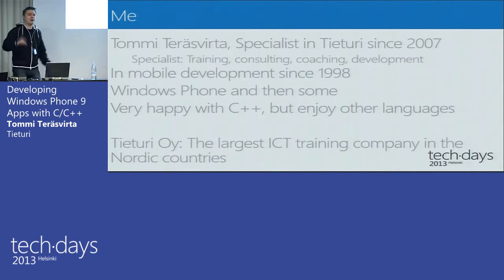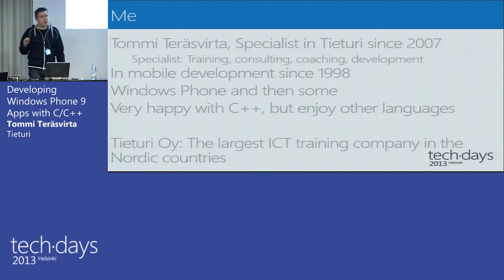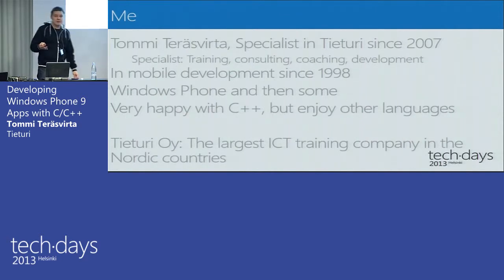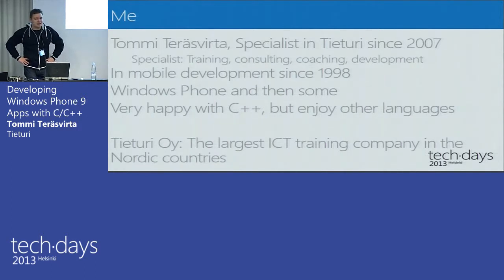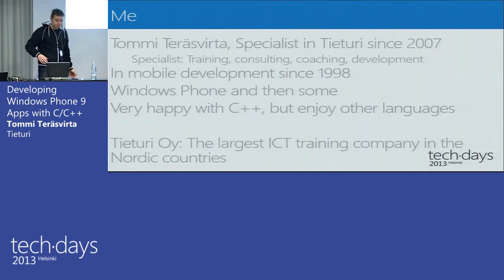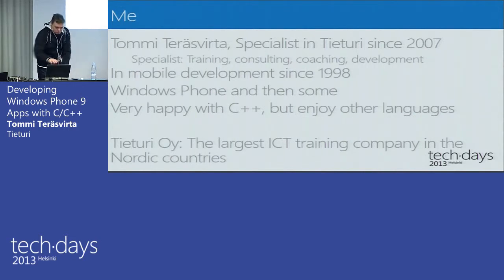One bullet about my company: we are the largest ICT training company in Finland. We are or will be part of a Sopra-listed company — they bought us last month — so the name may be remaining or changing. We have offices in Finland and Sweden, with about 80 people working in Finland and some in Sweden as well.